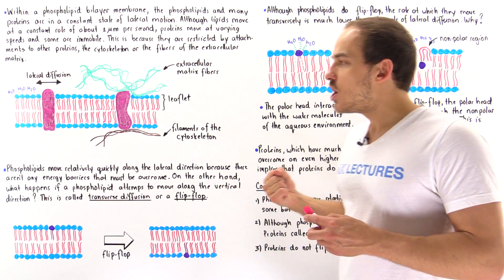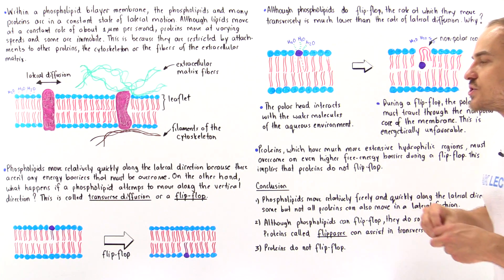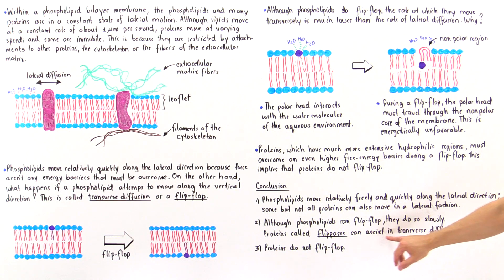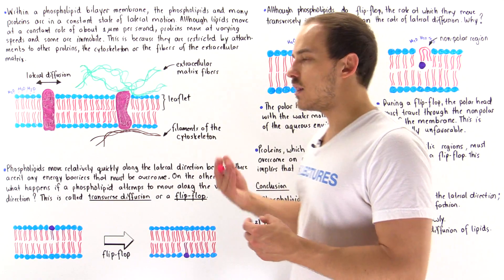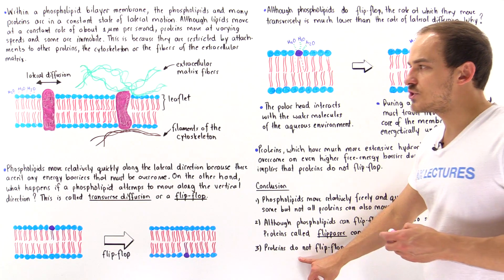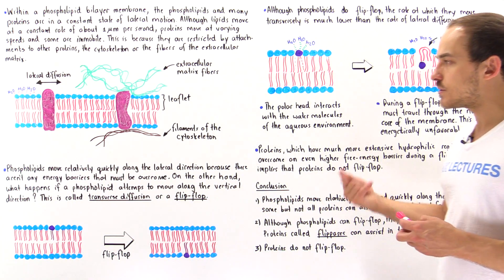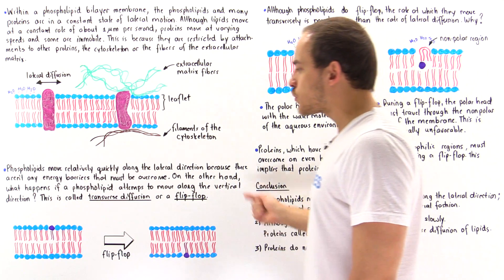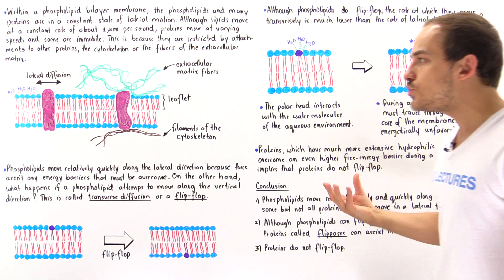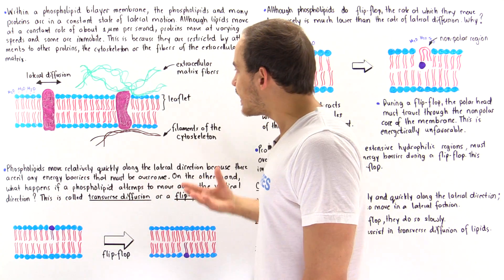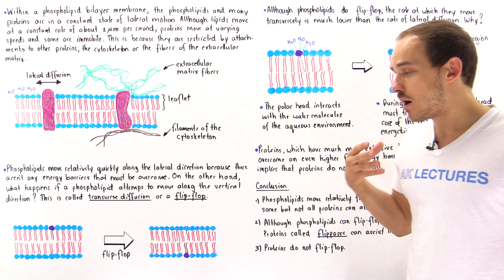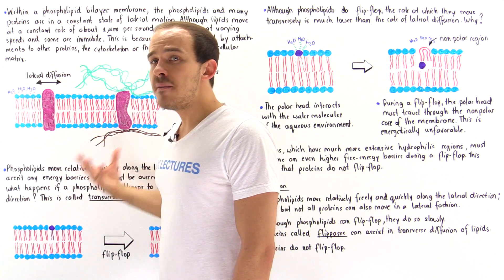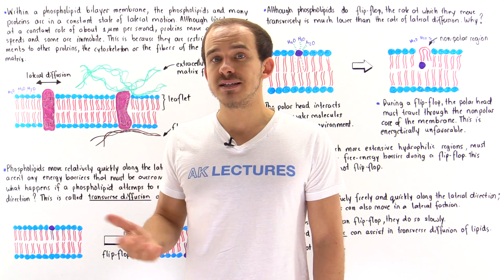Inside our membranes, we have special proteins known as flippases that actually allow the movement of these phospholipids across the membrane. Lipases are proteins that can assist in the transverse diffusion of lipids, and we'll discuss these in more detail in future lectures. Point three: proteins do not actually flip-flop. This leads to an important conclusion — because proteins don't move transversely, and phospholipids do so only at a very low rate, the asymmetry of the two leaflets can basically be preserved. If that asymmetry were not preserved, the membrane would lose its functionality, as we'll see in a future lecture.